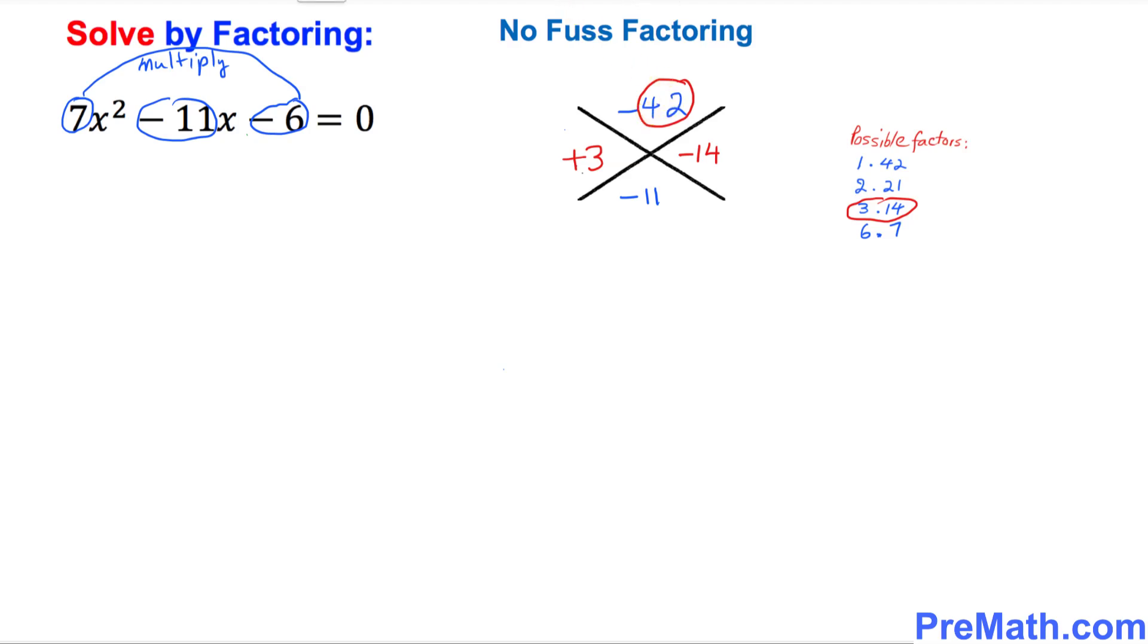So our next step is this one over here. I want you to just simply look at this over here, this part only 7x. Just ignore this exponent part, only 7x. I want you to just put down 7x and 7x as well. And then our factors turn out to be positive 3 and negative 14. I want you to just put down right up here positive 3 and negative 14.